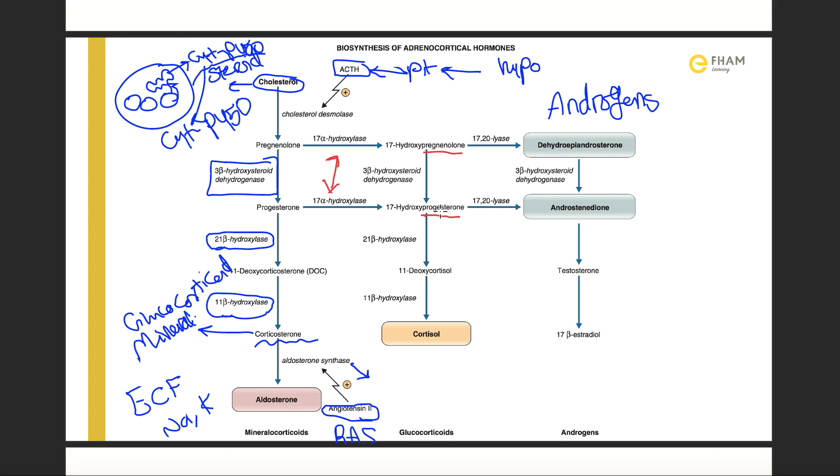3-beta-hydroxysteroid dehydrogenase can convert 17-hydroxypregnenolone to 17-hydroxyprogesterone if you start from pregnenolone. Now 17-hydroxyprogesterone is converted to 11-deoxycortisol by the enzyme 21-beta-hydroxylase. We note that this enzyme is the same in this pathway. So the pathway until here is the same or similar as we use the same enzymes. 11-deoxycortisol is converted to cortisol finally by 11-beta-hydroxylase, which adds a hydroxy group on carbon 11.